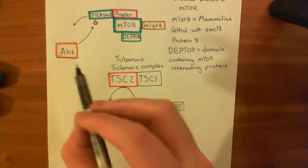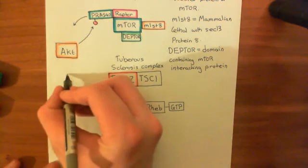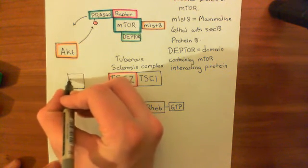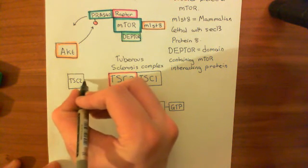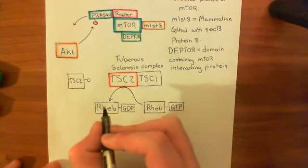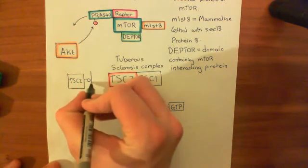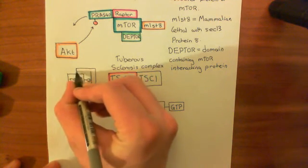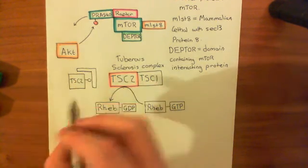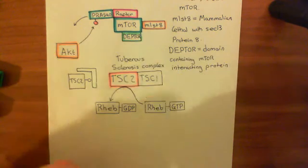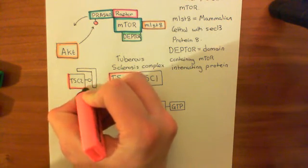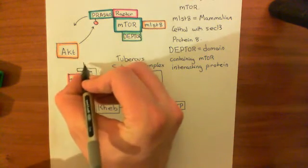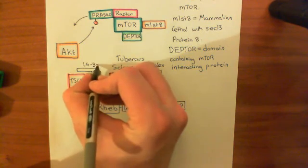What protein kinase B, or AKT, does is it phosphorylates the tuberous sclerosis complex 2 protein — this TSC2 protein — and when it phosphorylates it, TSC2 now associates with a protein known as 14-3-3. So AKT phosphorylates TSC2, and TSC2 gains high affinity for the protein 14-3-3.